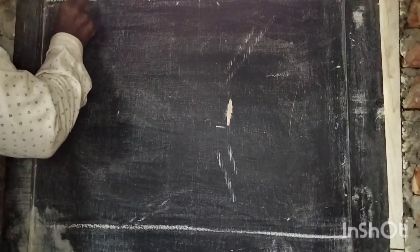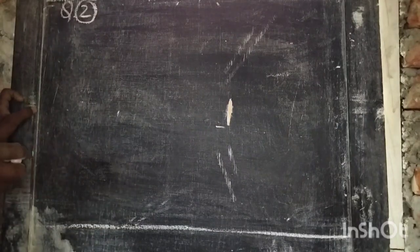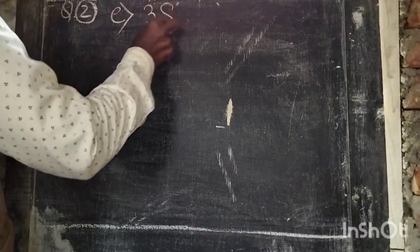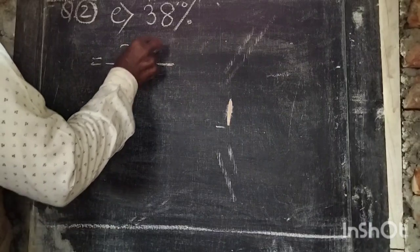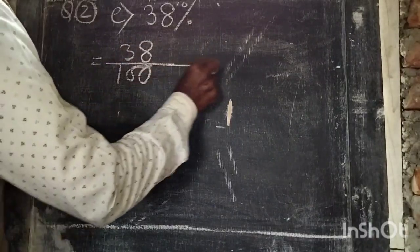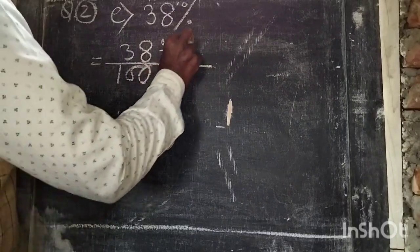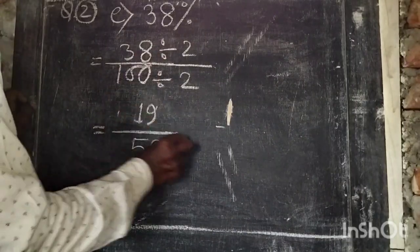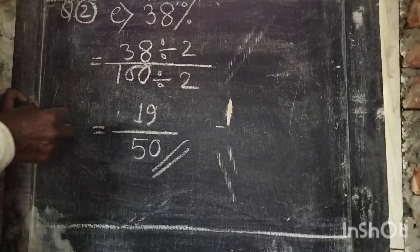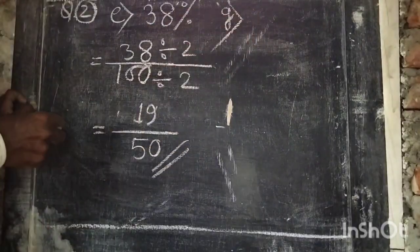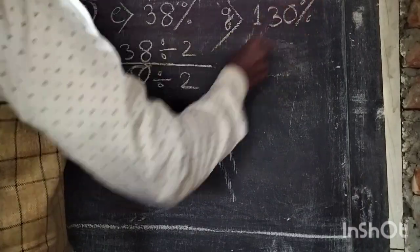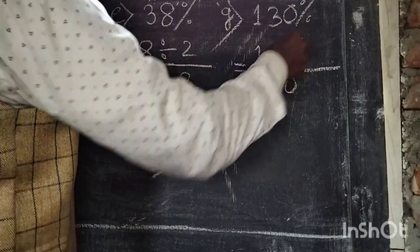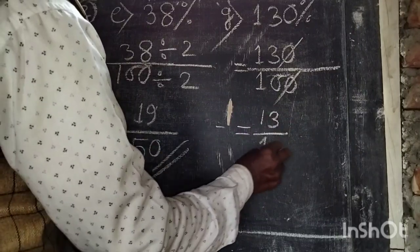Part P: 38 percent — write as 38 by 100. Dividing by 2, the simplest form is 19 by 50. Part G: 130 percent — write as 130 divided by 100. Cancelling one zero, the simplest form is 13 by 10.